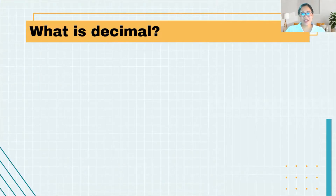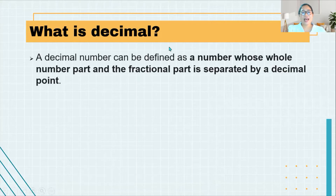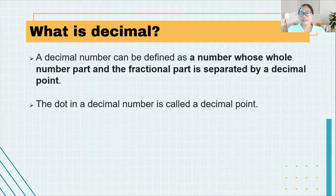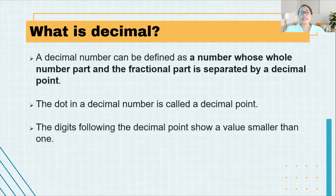First, let's define what a decimal is. A decimal number can be defined as a number whose whole number part and the fractional part is separated by a decimal point. The dot in a decimal number is called a decimal point. The digits following the decimal point show a value smaller than 1.